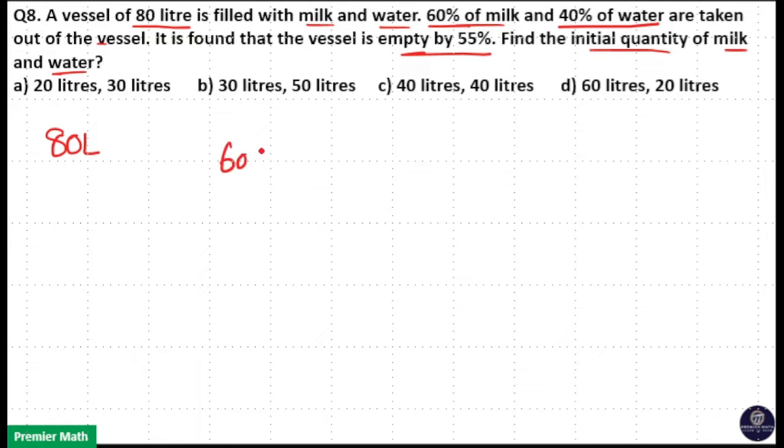But we know 60 percentage of milk and 40 percentage of water are taken out from the vessel. So this is an emptying process. After these two processes the vessel becomes empty by 55 percentage. So these three are emptying processes.